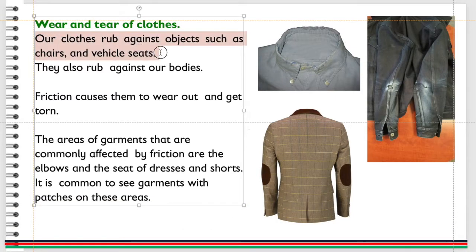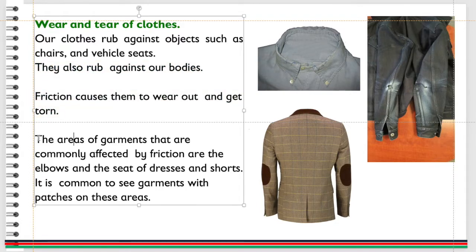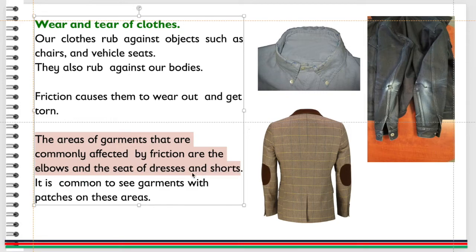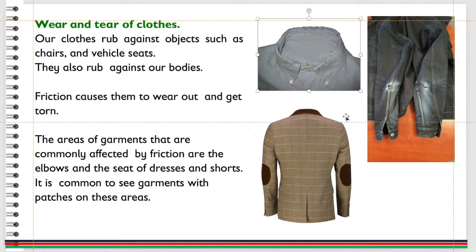Wear and tear in clothes: our clothes rub against objects such as chairs and vehicle seats, and also against our bodies. Friction causes them to wear out and get torn. The areas of garments commonly affected by friction are the elbows and the seat of dresses and shorts.